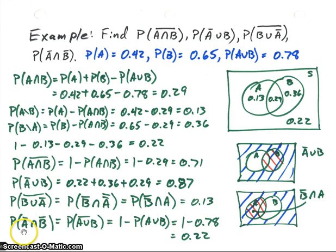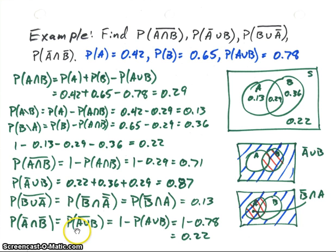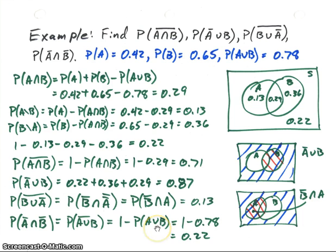For P(A-not ∩ B-not), I use DeMorgan's law to rewrite this as P(A∪B) complement, then apply the complement property: 1 − P(A∪B) = 1 − 0.78 = 0.22, which corresponds to the outer region of our Venn diagram.